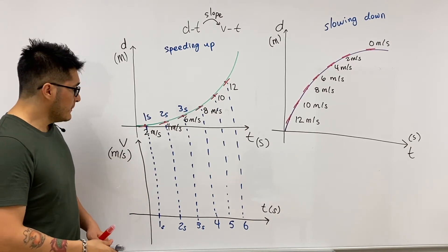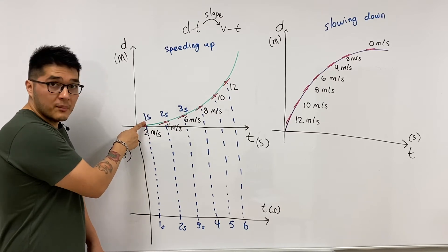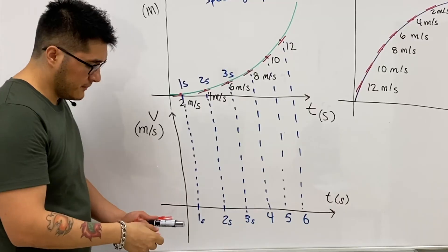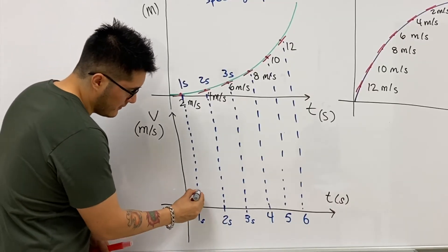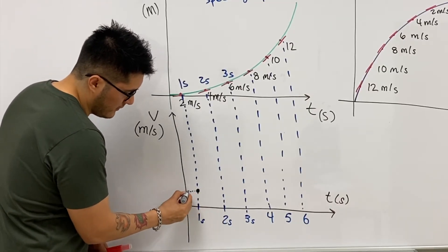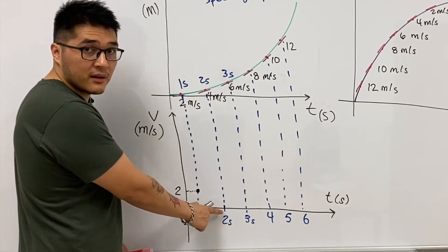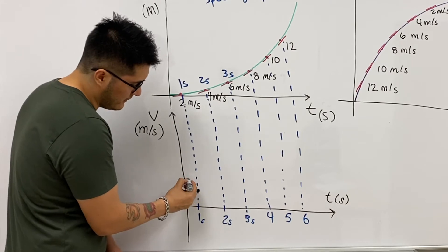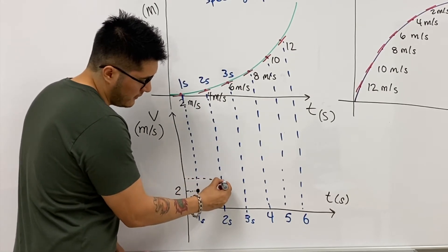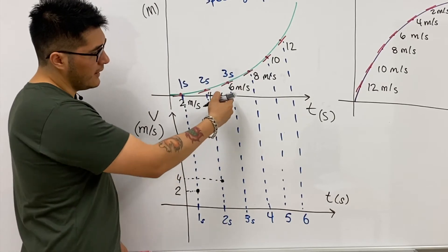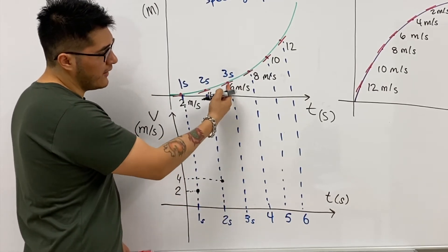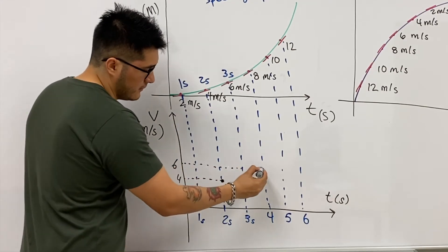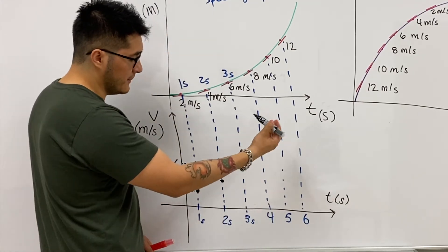What we can do then, at the one second mark, how fast was the cheetah going? It was moving at 2 meters per second. At the two second mark, how fast was the object going? 4 meters per second. At the three second mark, how fast was the object going? And we keep doing this for the rest of them.